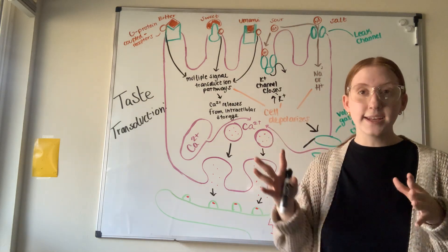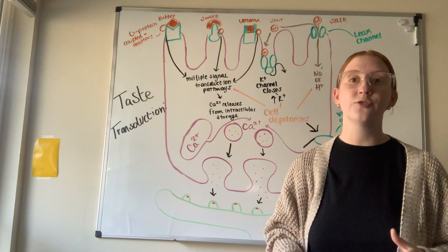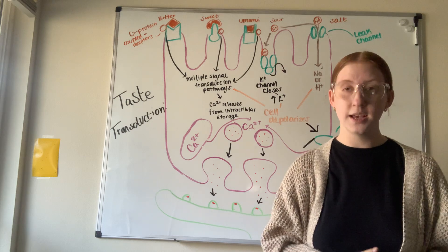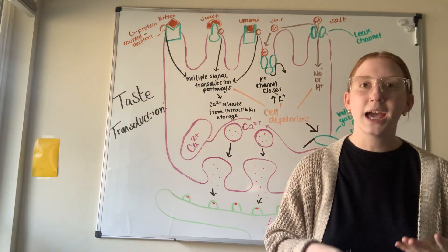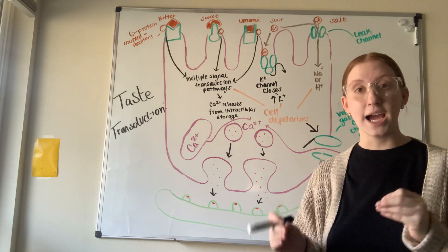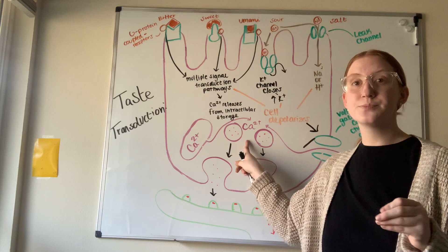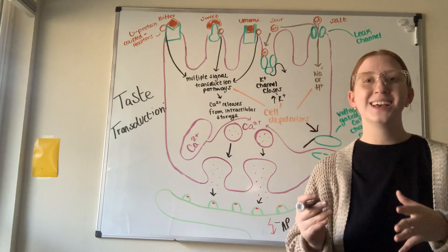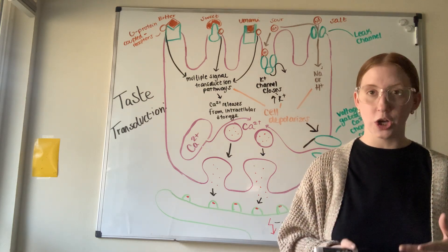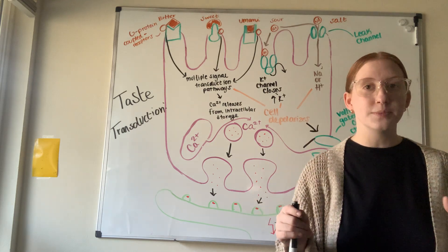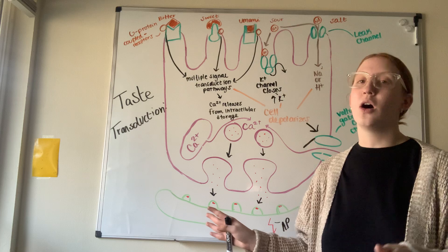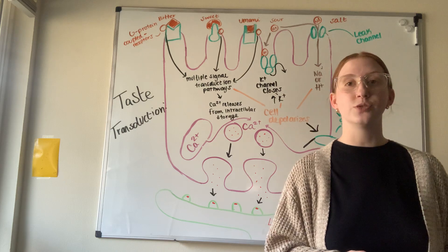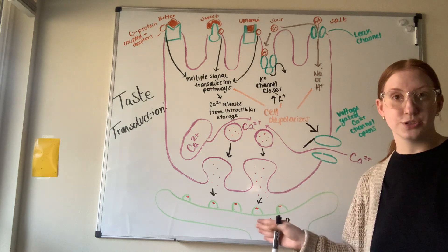Then calcium will flow in, either extracellularly or from intracellular storage. The sodium increases, opening up voltage-gated channels and triggering exocytosis. Calcium attaches to receptors on the vesicles, causing the vesicle to attach to the cell membrane, fuse, and release neurotransmitters. This causes depolarization of the neuron — sodium flows in — and if the threshold is reached, action potentials travel to the brain.